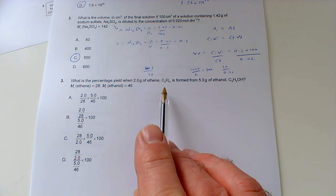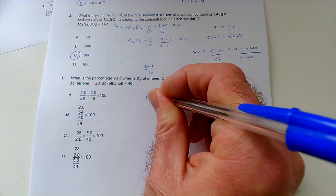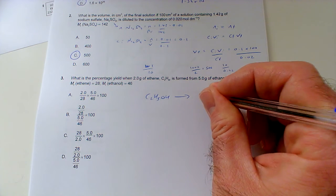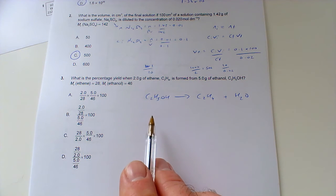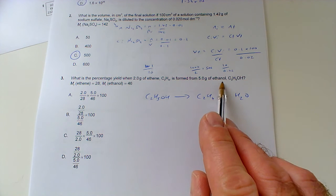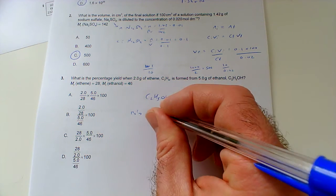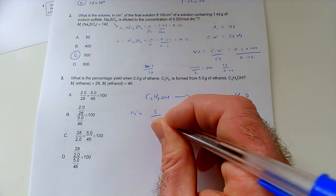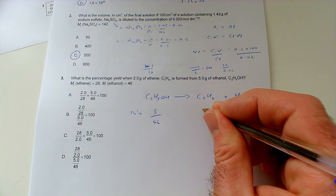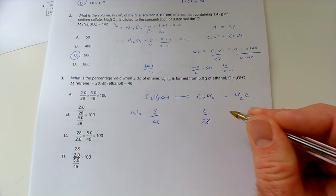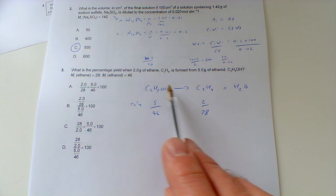Question 3: what is the percentage yield when 2 grams of ethene C2H4 is formed from 5 grams of ethanol? We've got ethanol, basically C2H5OH, and then that would give us ethene by eliminating water. So our number of moles of ethanol that we start with, we've got 5 grams, and that's going to be divided by the relative formula mass. So our moles is 5 divided by 46. And then how much ethene do we make? Well we make 2 grams, so the moles would be 2 divided by its relative formula mass which would be 28.